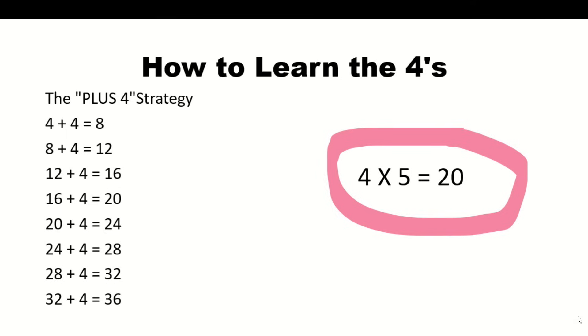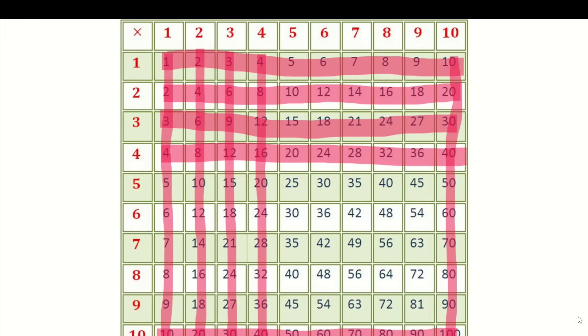How to learn the fours, I do it the same strategy as the threes. I do this with a plus four strategy. I say what's four plus four, they say eight. Plus four, twelve. Plus four, sixteen. Plus four, twenty, twenty-four, twenty-eight, thirty-two, thirty-six. Have them understand that you're adding four each time. Then maybe you can say, can you count by fours? Four, eight, twelve, sixteen, twenty, twenty-four, twenty-eight, thirty-two, thirty-six, forty. We've crossed off the ones, the twos, the threes, and the fours.